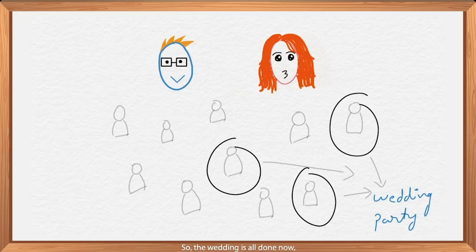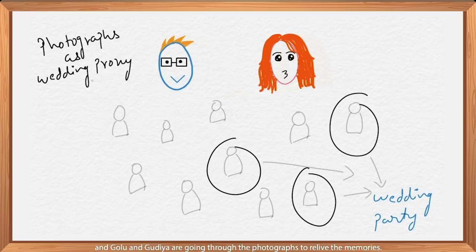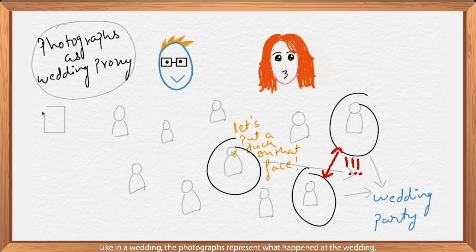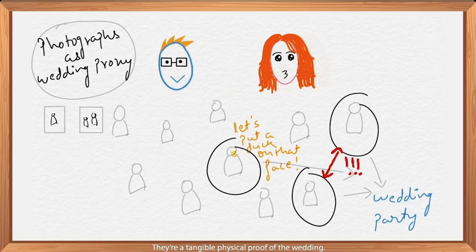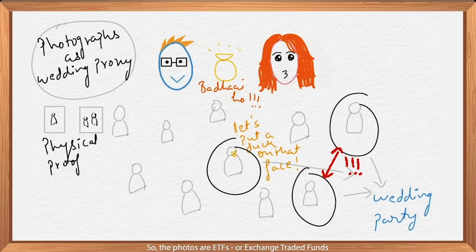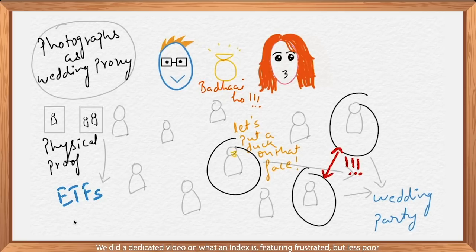The wedding is all done now and Golu and Guriya are going through the photographs to relive the memories. Why is Neeti making a duck face everywhere, and why is she present in every picture? And why is Prakash not present in any — probably fighting with his girlfriend somewhere. Like in a wedding, the photographs represent what happened at the wedding, or at least they try to mimic the wedding atmosphere — they are a tangible physical proof of the wedding. So, the photos are ETFs or Exchange Traded Funds. They are trying to mimic the index. We did a dedicated video on what an index is, featuring frustrated but less poor Golu and Guriya — click here to watch the video.